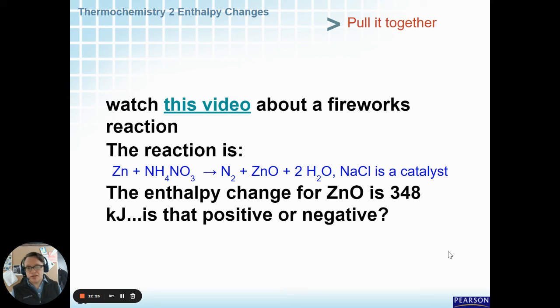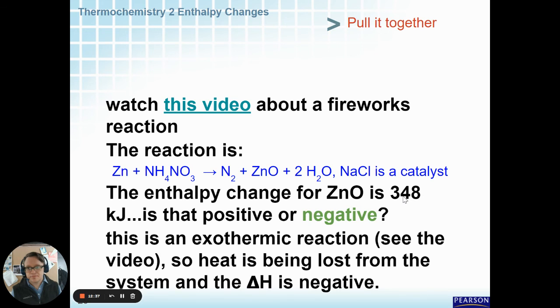The enthalpy change is 348 kilojoules. The question is, the enthalpy change for making zinc oxide is 348 kilojoules. Is this a positive or negative change? This is an exothermic reaction. The heat is being lost to the system. And, the change in enthalpy would be negative.